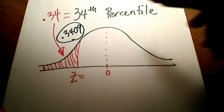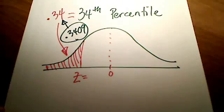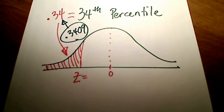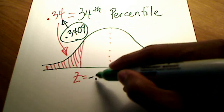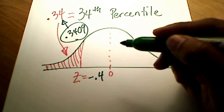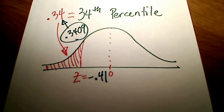So in that number there, .3409 corresponds to a Z score of negative .41. Negative 0.41.